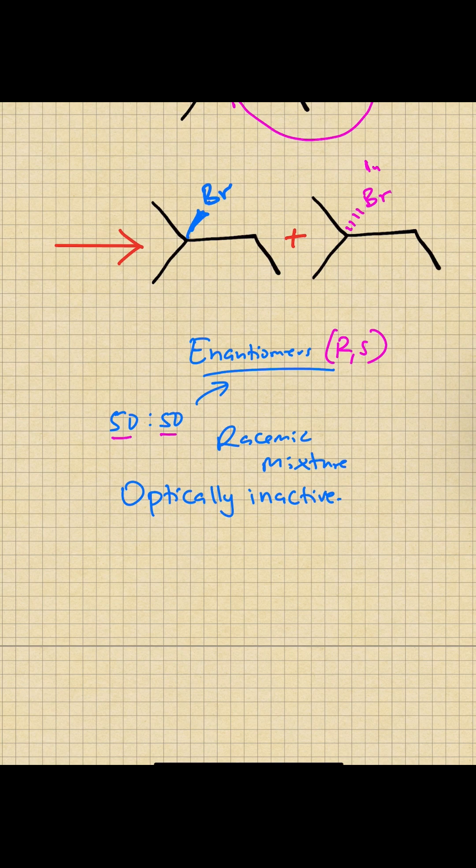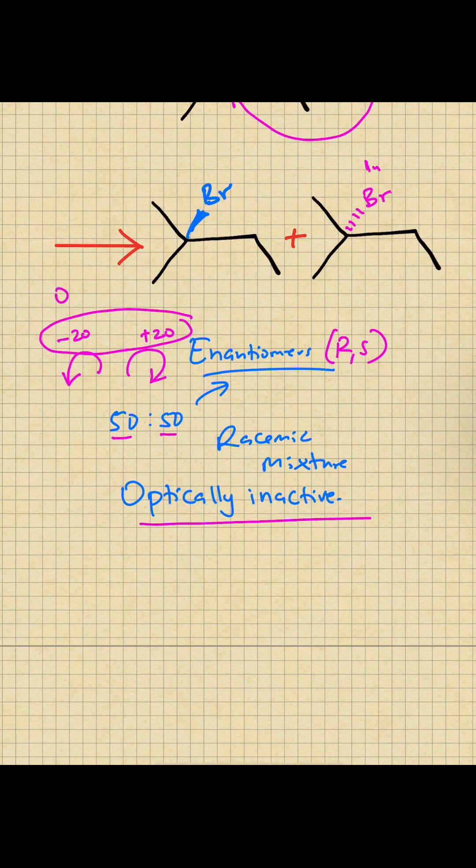That means 50% is say the R isomer and the other 50% will be the S isomer. Because of that, one half rotates the plane polarized light say in the negative direction while the other one rotates it in the opposite direction with the same value. Say one is minus 20, the other one is plus 20, and the result is that it becomes optically inactive because when you add these two it results in zero optical rotation.